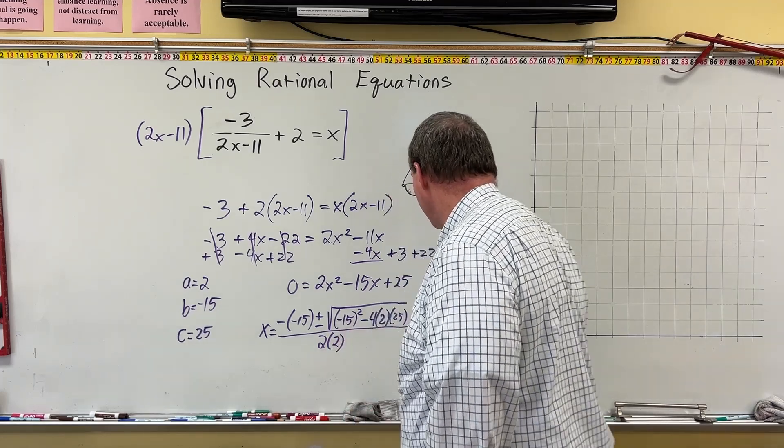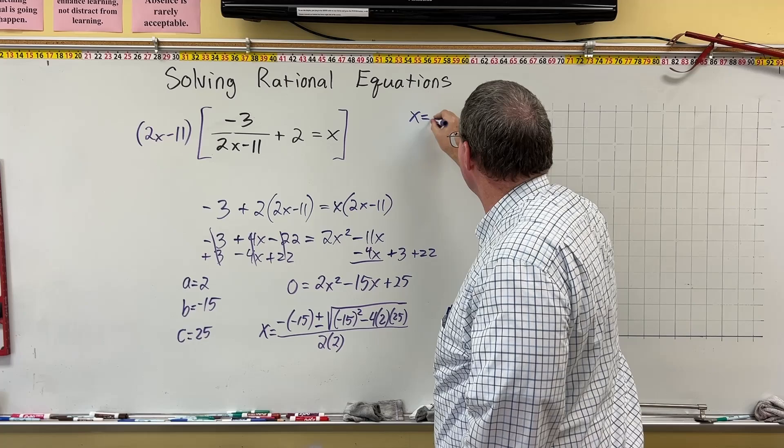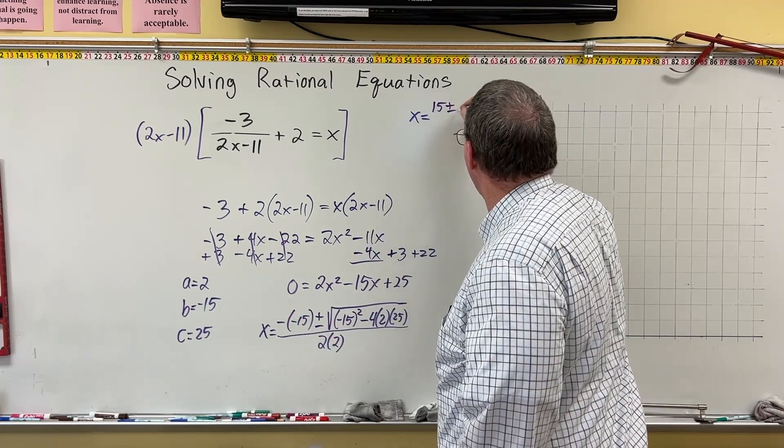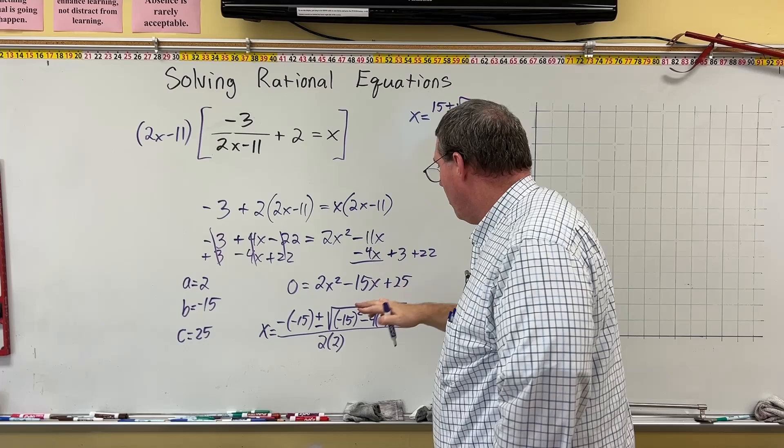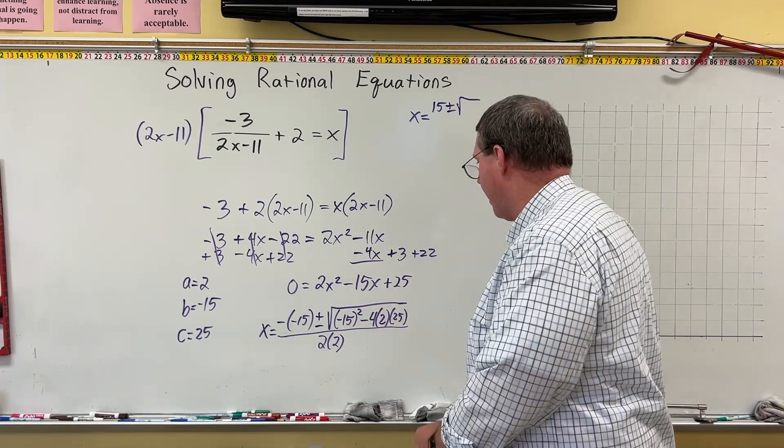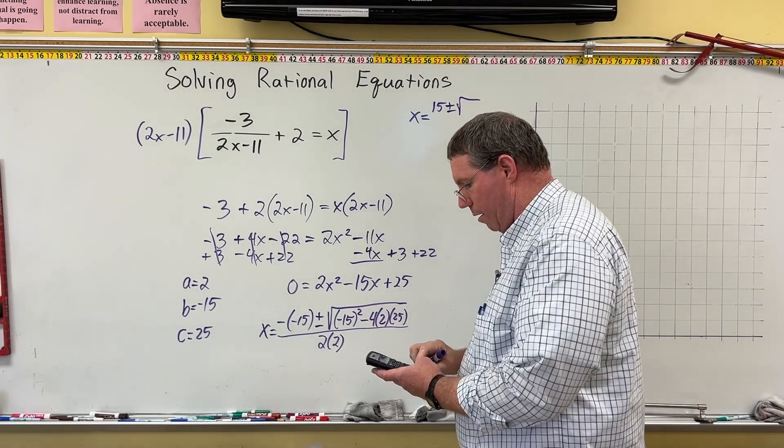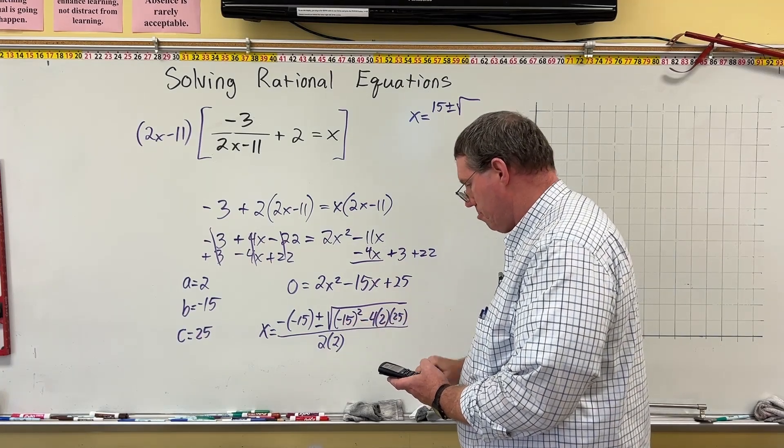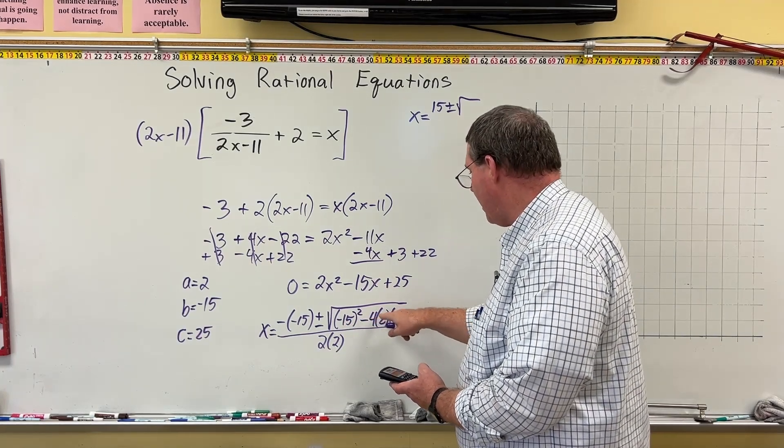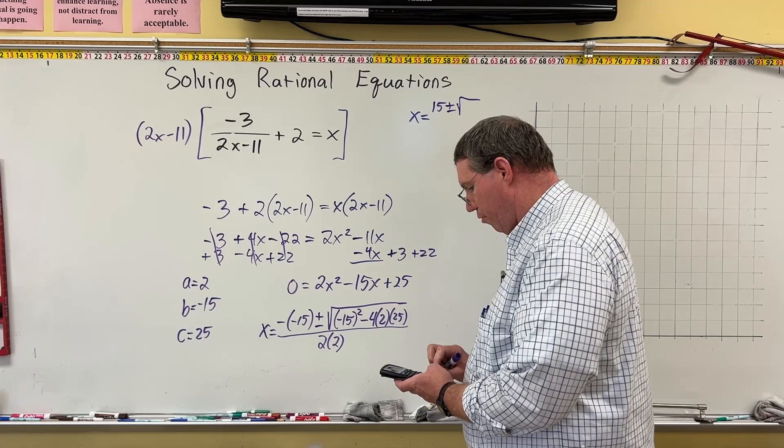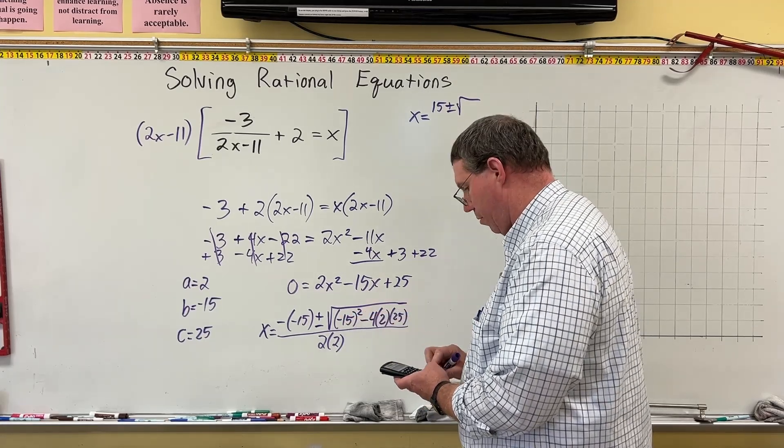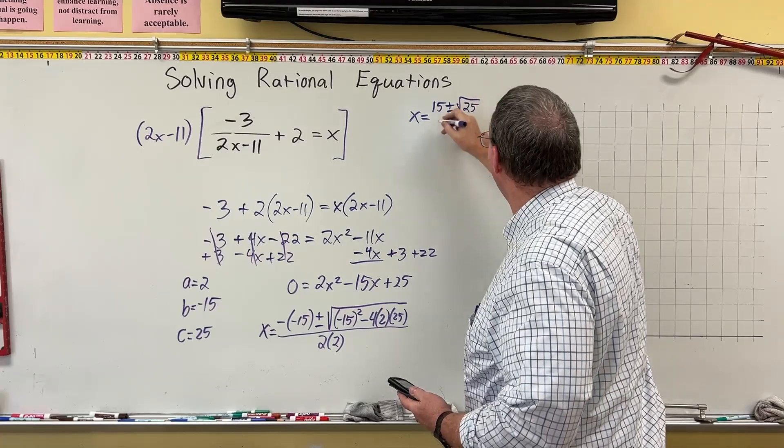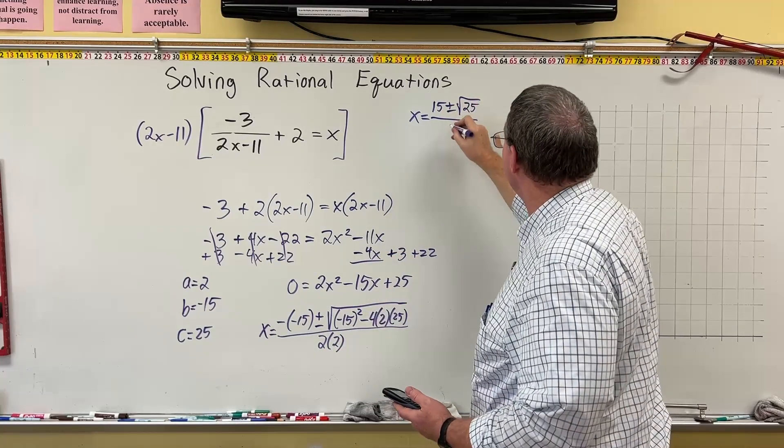Okay. So let's clean this up just a little bit. I think I'll move up here. x is equal to negative negative 15 is just 15 plus or minus the square root. Well, 15 squared, if I do this in the calculator, negative 15 squared is the same thing as 15 squared, which is 225 minus 4 times 2 is 8. 8 times 25 is 200. So this is 200. So 225 minus 200 gives us 25. So we have the square root of 25 all over 2 times 2 is 4.